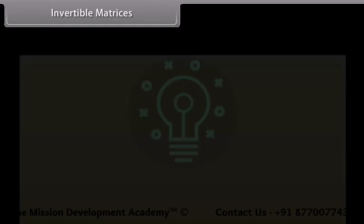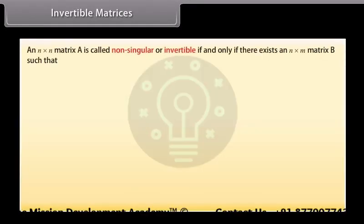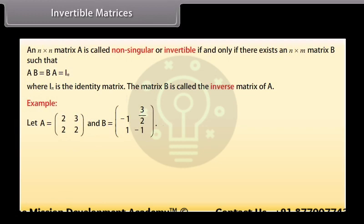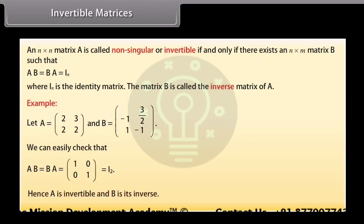Invertible matrices. An n-by-n matrix A is called non-singular or invertible if and only if there exists an n-by-n matrix B such that AB is equal to BA is equal to I_N, where I_N is the identity matrix. The matrix B is called the inverse matrix of A. Here, A and B are given, and we can easily check that AB equals BA equals the identity matrix. Hence, A is invertible and B is its inverse.